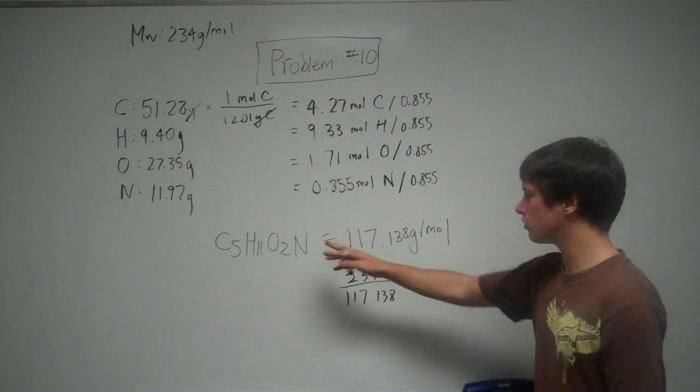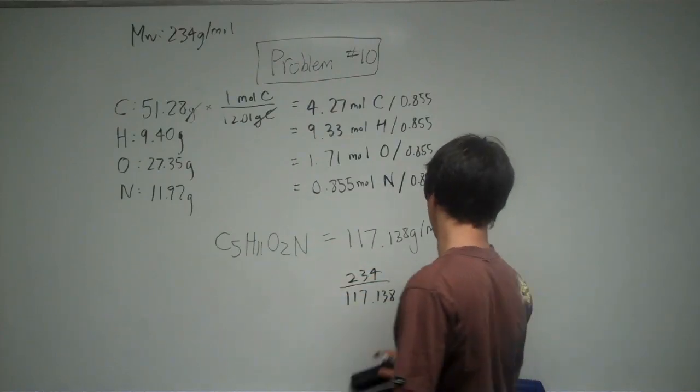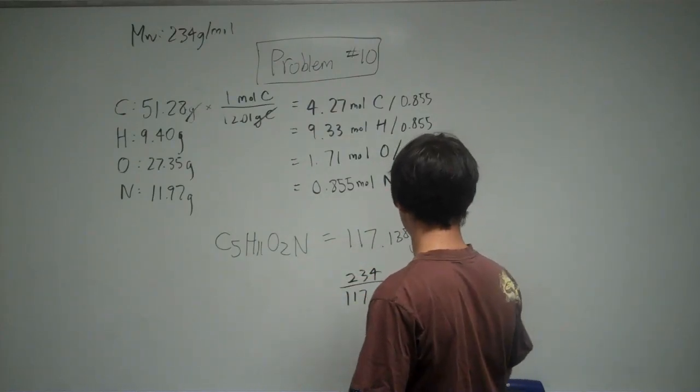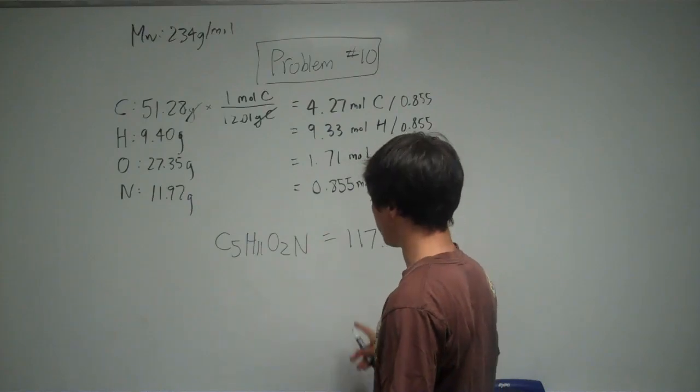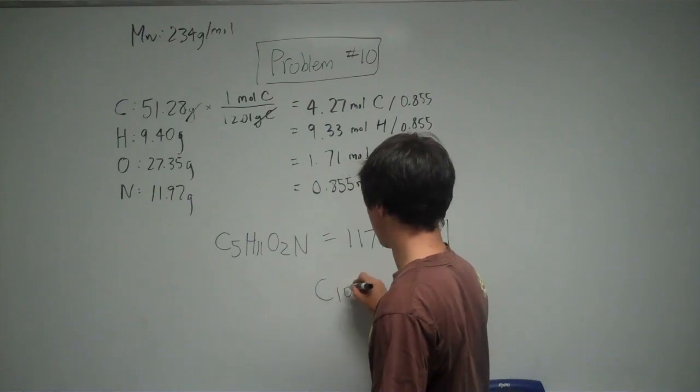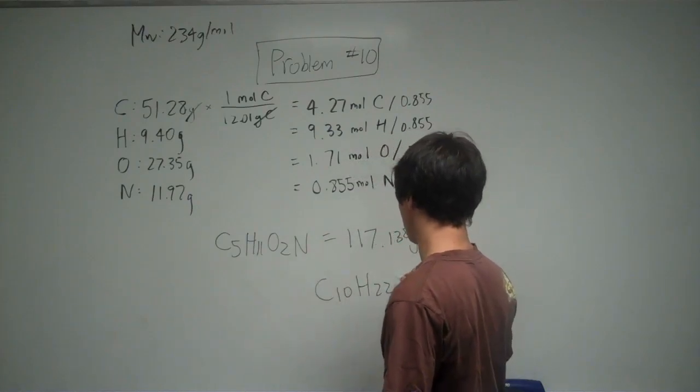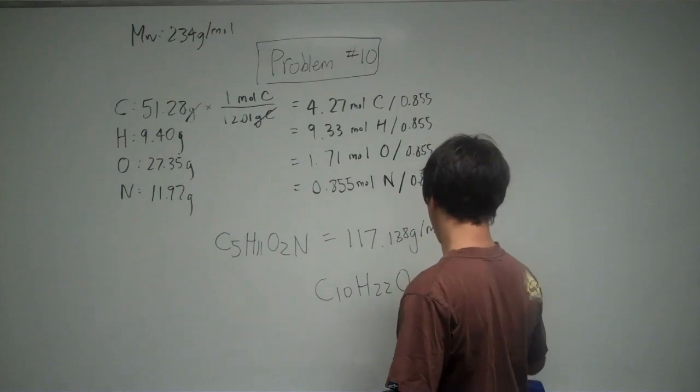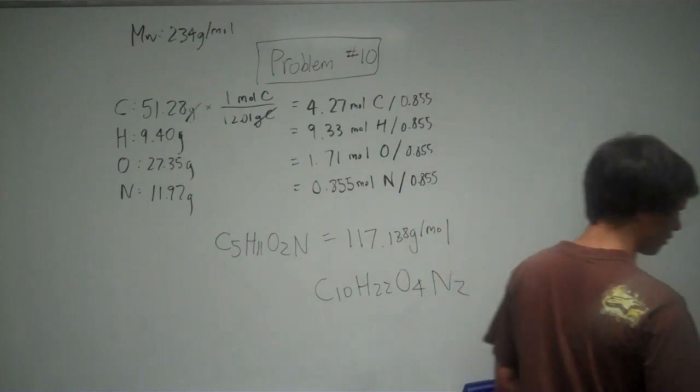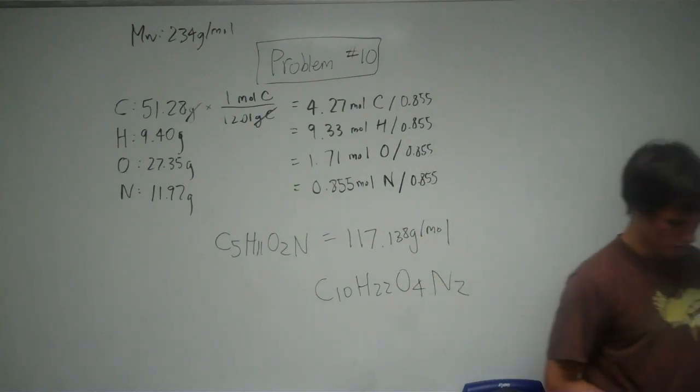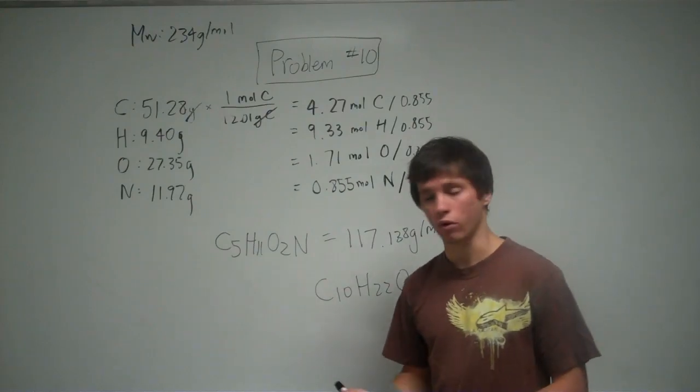So if we multiply this whole compound by 2, that will double the mass and give us the mass that we need. So your final answer is going to be C10H22O4N2. And that corresponds to answer choice 4 on your test.